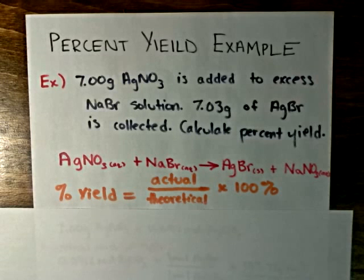And in this question we were also given a very important piece of information. We were told that the sodium bromide was in excess.